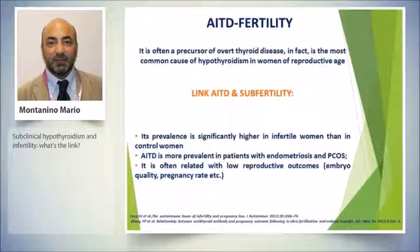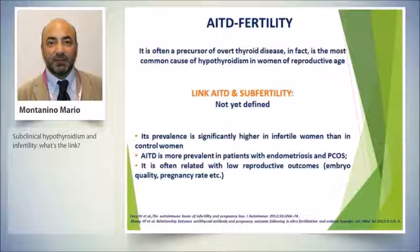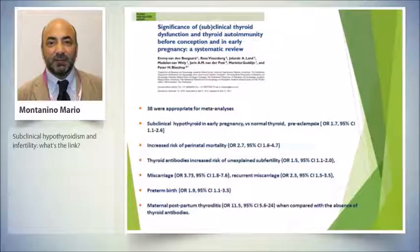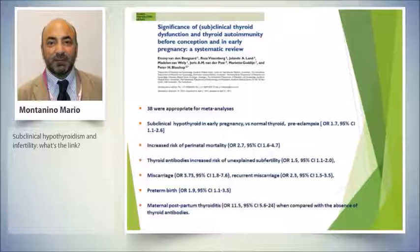Please don't forget the immune component of this topic. There is a link between autoimmune thyroid disease and fertility, though this link is not well defined. The prevalence of autoimmune disease is higher in infertile women — reported in patients with PCOS and endometriosis — resulting in lower reproductive outcomes. A meta-analysis from Holland, using 38 articles, found that subclinical hypothyroidism in early pregnancy is a high risk for eclampsia, with generally lower obstetric outcomes.